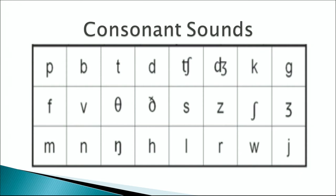The next IPA symbol denotes the j sound, as in judge, jar, jump, and jam. We use a specific symbol because the j sound can be written with the letter J as in judge, or with G as in George. Therefore, to avoid confusion, a unique IPA symbol is used to denote only the j sound.